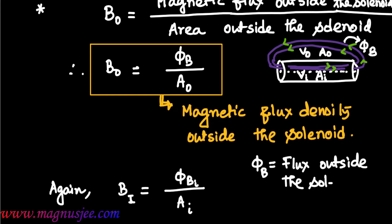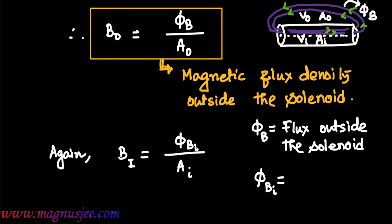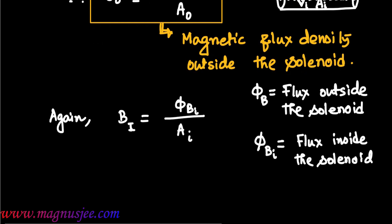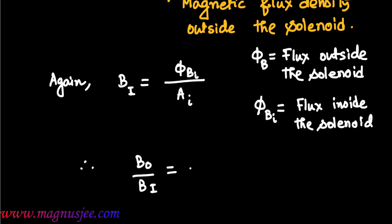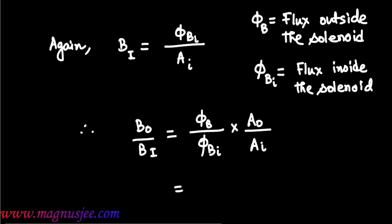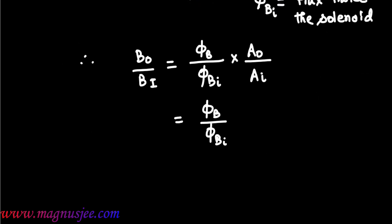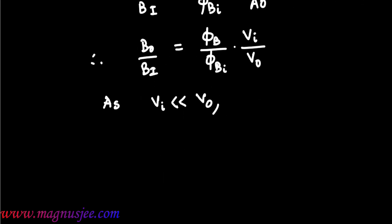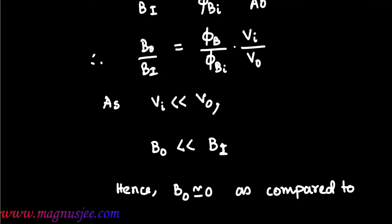φB is the flux outside the solenoid and φBI is the flux inside. Taking the ratio B0 divided by BI gives (φB / φBI) × (AI / A0). Since VI is much less than V0 — the volume inside the solenoid is much less than the volume outside — B0 is approximately equal to zero compared to BI. Hence, the magnetic field induction outside the solenoid is zero.